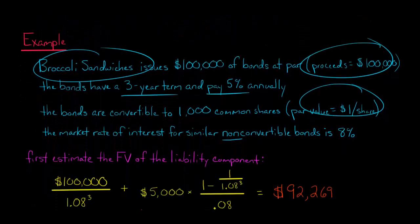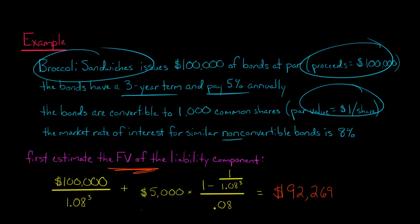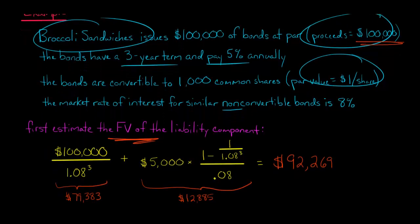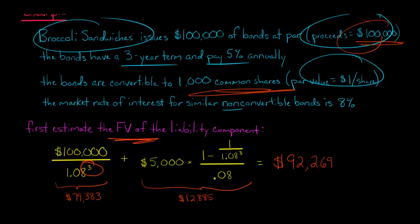First, we're going to estimate the fair value of the liability component so we can subtract it from the proceeds of $100,000. This is the formula for present value of a single amount. We have the face value — the amount to be repaid in three years — which is $100,000. So we take $100,000 divided by (1 + the discount rate) raised to N, the number of periods. We've got three periods here, and that gives us $79,383.